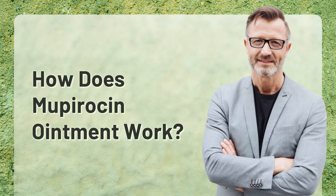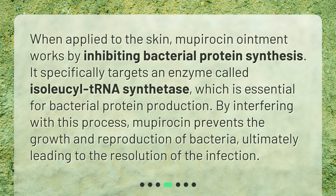How does Mupirocin ointment work? When applied to the skin, Mupirocin ointment works by inhibiting bacterial protein synthesis. It specifically targets an enzyme called isoleucyl-tRNA synthetase, which is essential for bacterial protein production. By interfering with this process, Mupirocin prevents the growth and reproduction of bacteria, ultimately leading to the resolution of the infection.